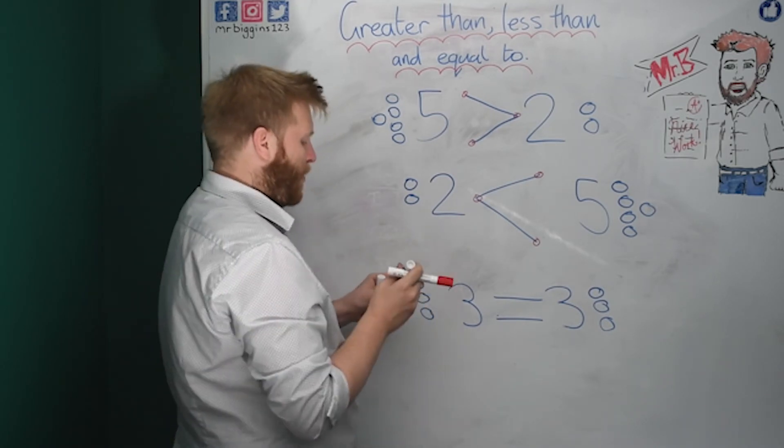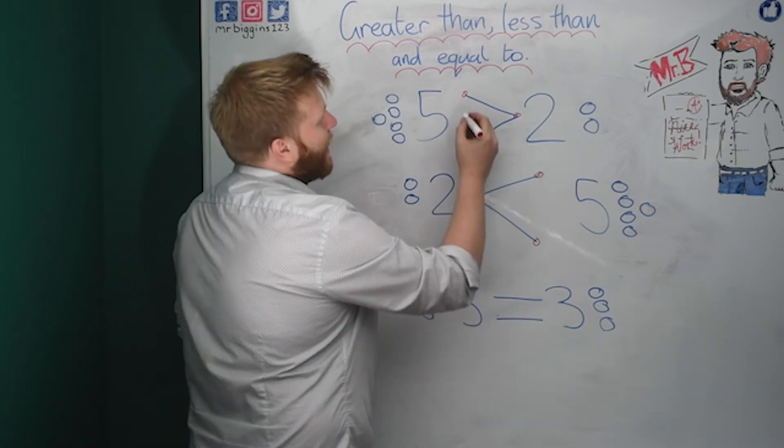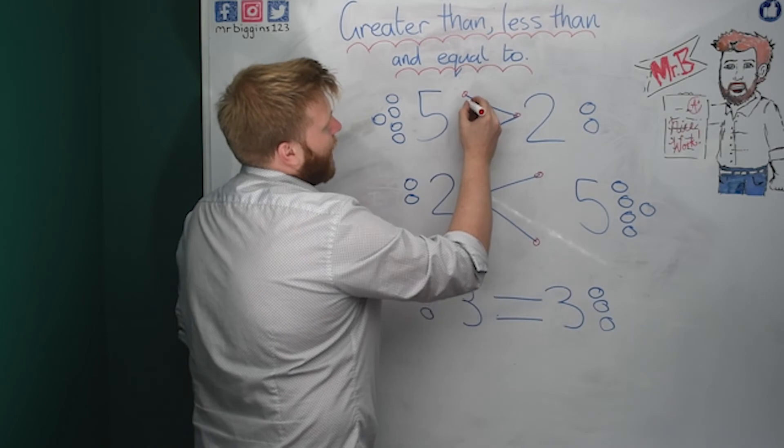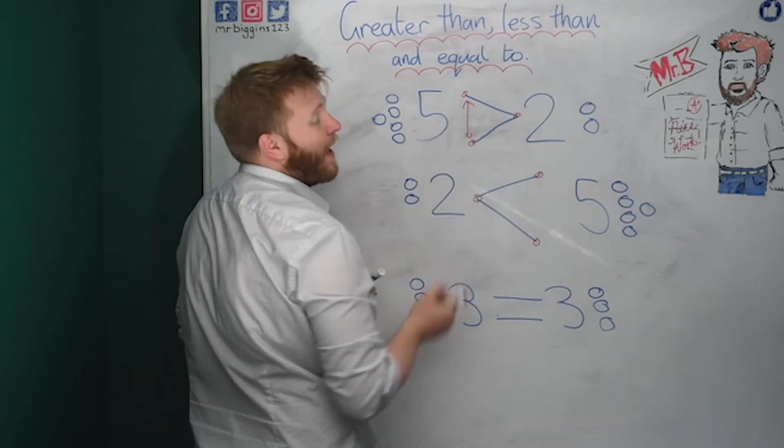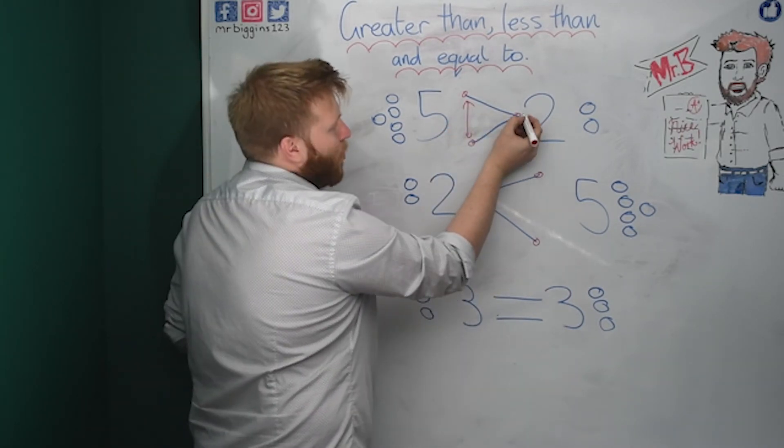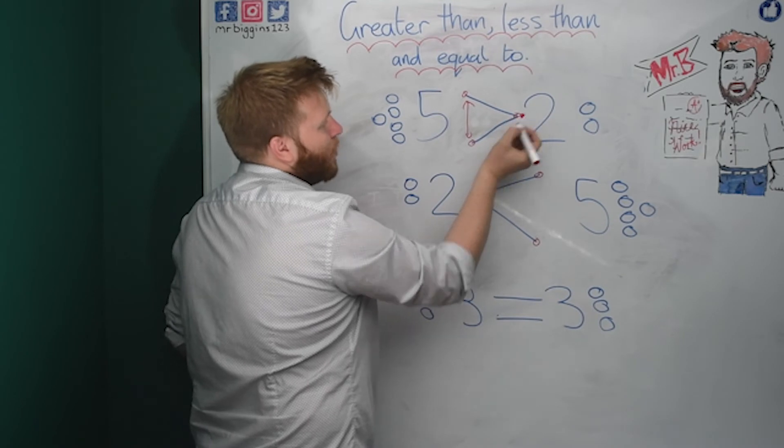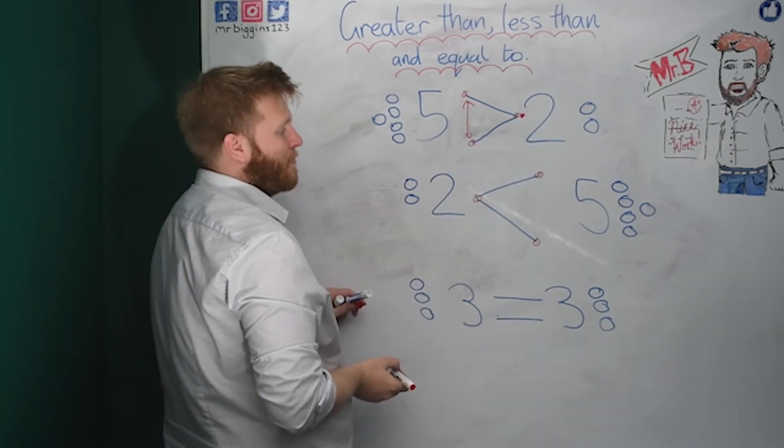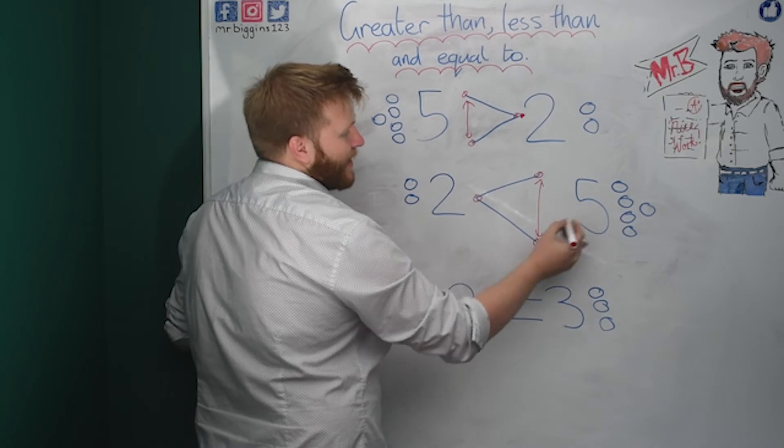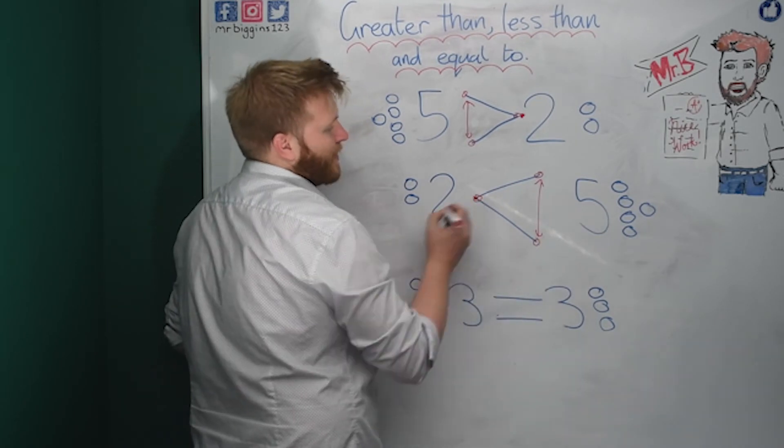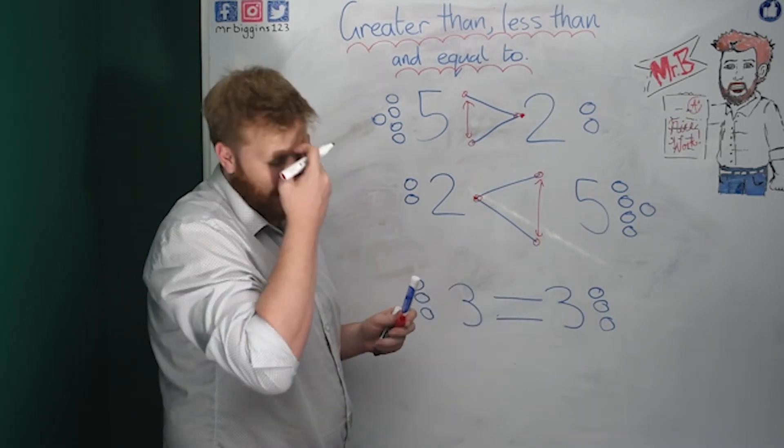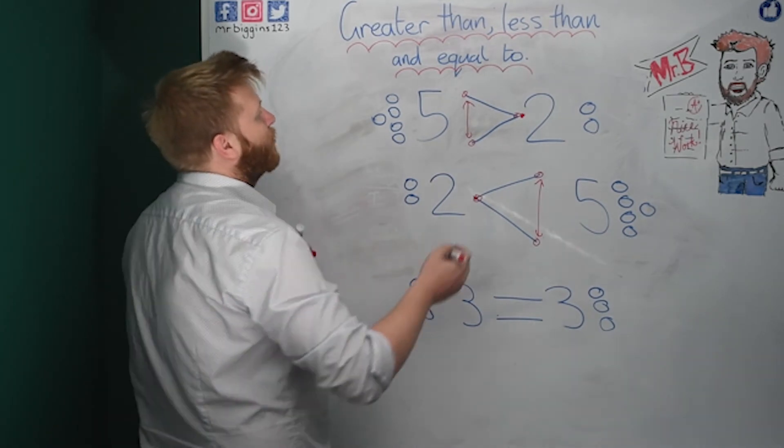The way I do it, and I remember it, is I've got a big gap here. Big gap. So I put my big number on this side. And a small gap. They're actually touching. There's no gap at all. So that's my small number. Same here. Look. Big gap on that side. So I put my big number and a small gap on that side.